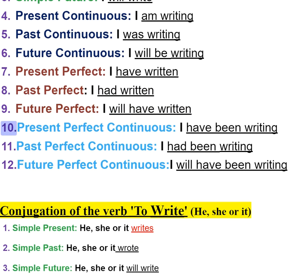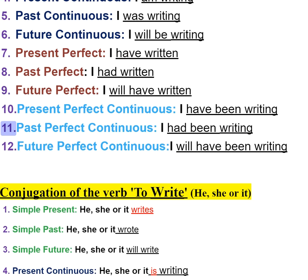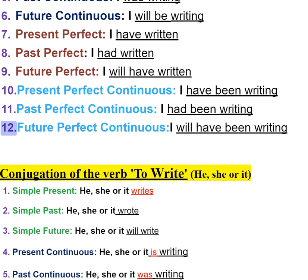Ten: present perfect continuous — I have been writing. Eleven: past perfect continuous — I had been writing. Twelve: future perfect continuous — I will have been writing.